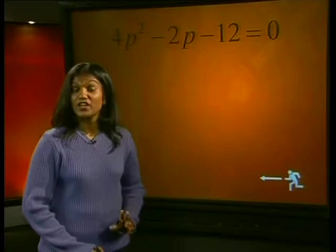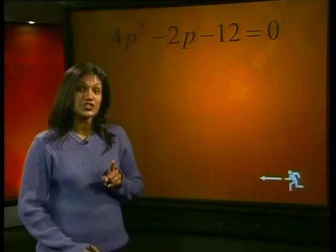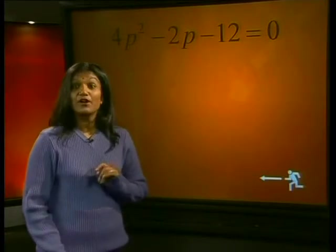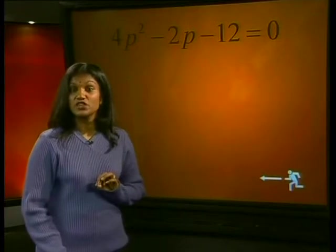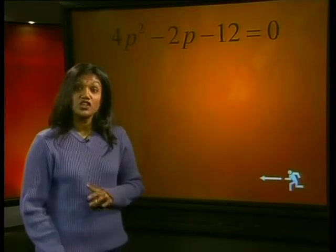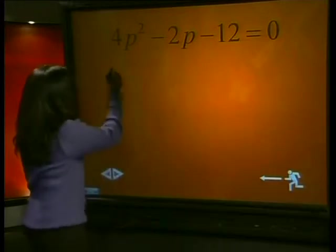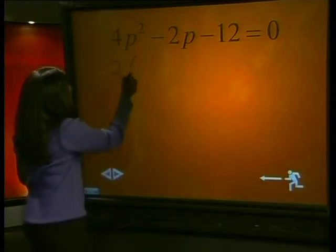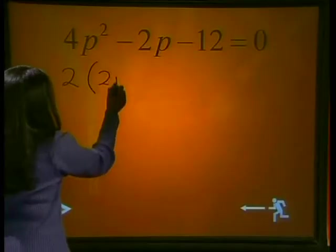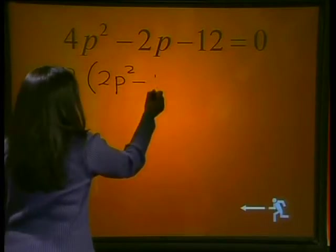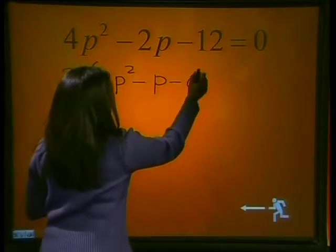You could factorize straight away into two brackets but do you notice the common factor of 2? By removing this common factor first you make the trinomial easier to work with. So taking out the common factor of 2, we get 2(2p² - p - 6) = 0.